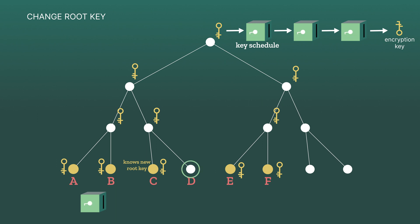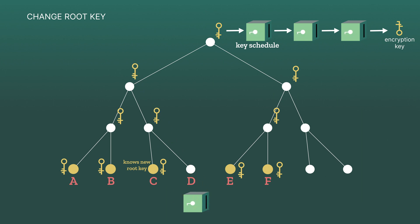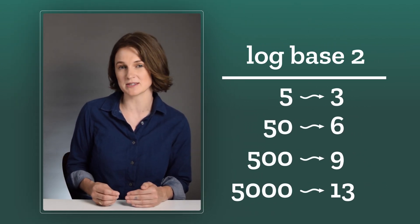Carol still needs to share the new keys with Doug. She does this by directly telling him the private key for the node immediately above both of them — the one they share. Then Doug is able to apply the key derivation function twice to learn the rest of the new keys on the path up to the root. Overall, Carol had to encrypt and send three new keys instead of sending to all five other members of the group. Three and five aren't that different, but if you have hundreds or thousands of people in the group chat, it makes a big difference. The number of keys that have to be encrypted and sent is logarithmic in the number of participants — way smaller. And the update has increased the security: if Carol's private key had been compromised, giving someone access to the group chat, they would be kicked out.